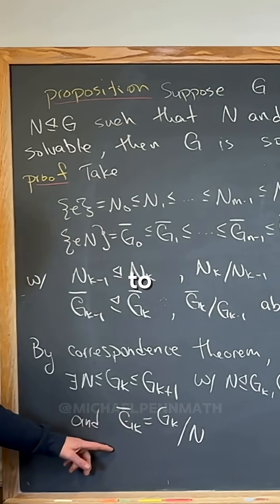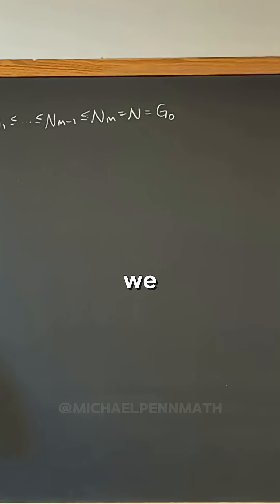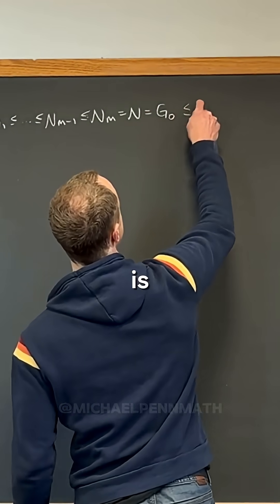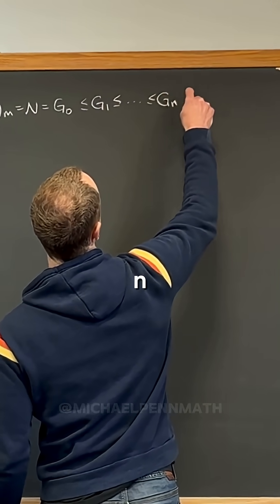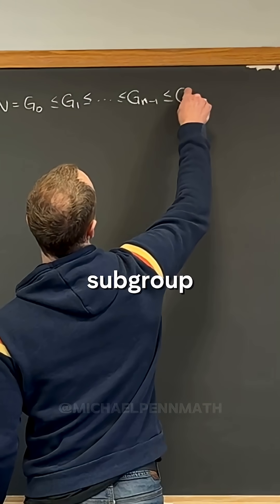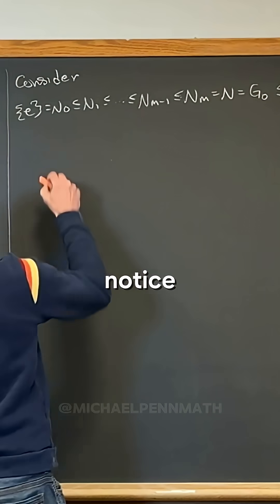Right? And now we can just keep extending this, so this is a subgroup of g1, a subgroup of gn-1, a subgroup of gn, which is equal to g. And now if we look closely at this, notice that quotients...